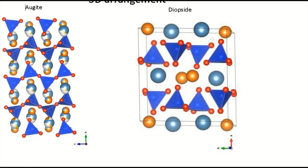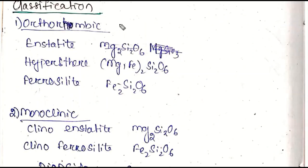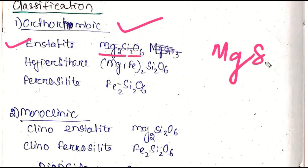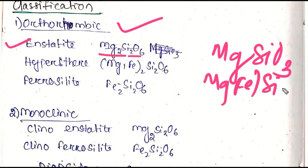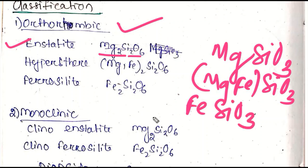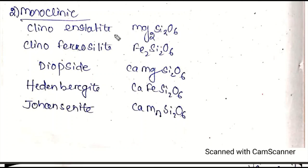Looking at the orthorhombic system: enstatite has the formula Mg2Si2O6. The pyroxene MgSiO3 represents the simplified formula. Ferrosilite is Fe2Si2O6, or FeSiO3 in simplified form. These are the orthorhombic pyroxene members.